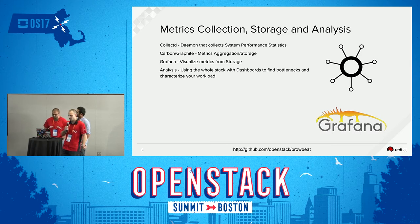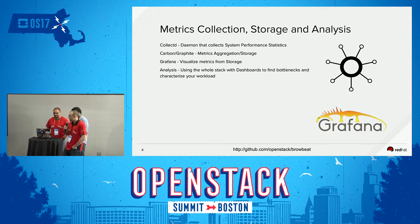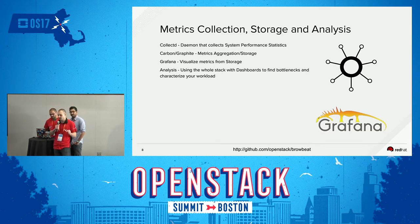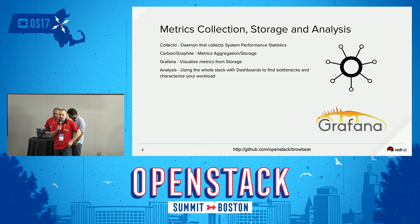Collectd ships metrics over to Carbon and Graphite, which stores your metrics. Grafana is then able to talk to Graphite's API and expose those metrics in a visual way. The analysis part is really just digging through the dashboards and looking at where your bottleneck is.